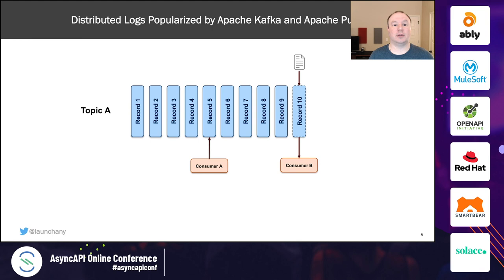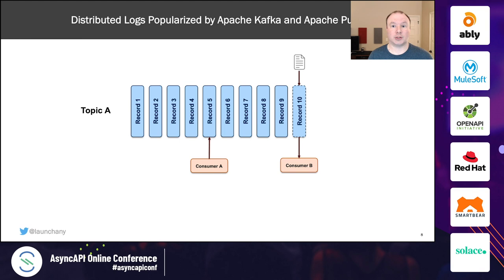We've also seen the use of distributed logs as an alternative to message brokers for broadcasting events or data state changes. In this case, distributed logs live within a topic; message records are appended but never modified, and consumers can walk from the very first record or the latest published record and react to that. This approach is offered by Apache Kafka and Apache Pulsar, and now Apache Pulsar is merging queues, topics, and distributed logs together.